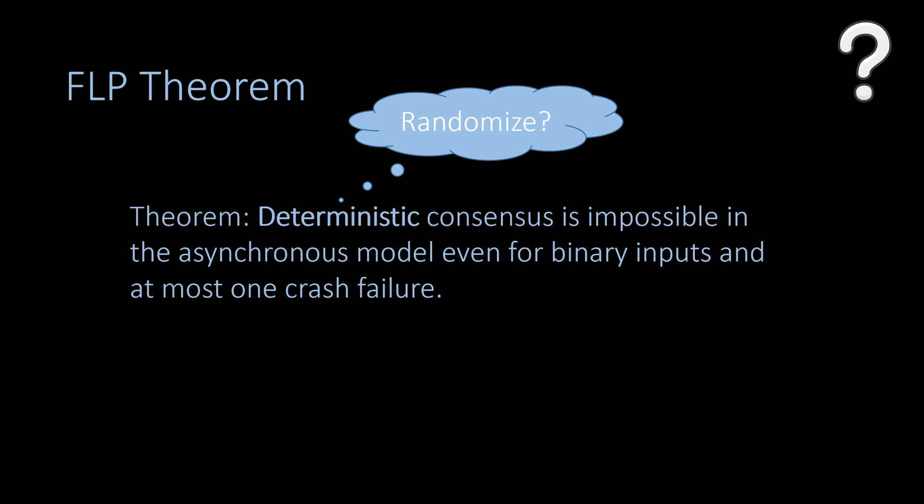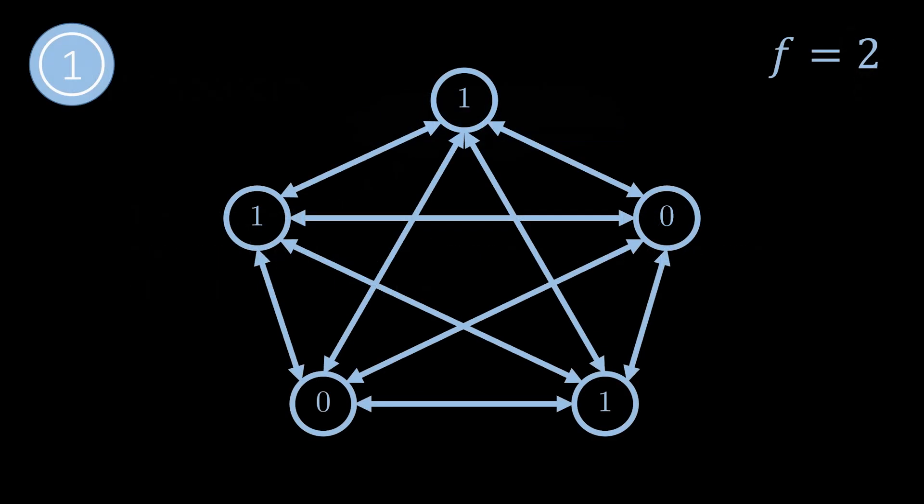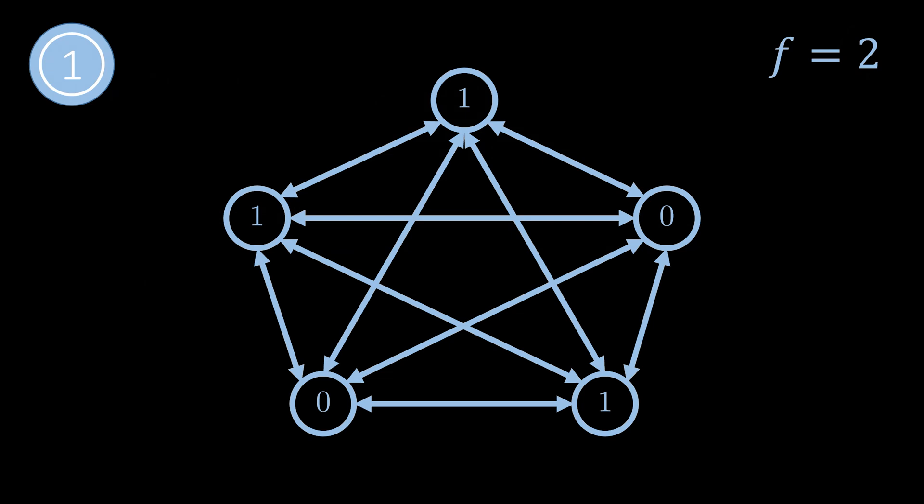In this video we will show that it is indeed possible to solve the problem using randomization. The algorithm we present not only works, it can tolerate way more than one failure — the nodes will eventually decide on a value as long as fewer than half of all nodes may crash. We illustrate the algorithm using an example consisting of five nodes. Since more than half of the nodes must not fail, there can be at most f equals two failures. We consider crash failures, where a failed node simply stops processing and sending messages until the end of the execution.